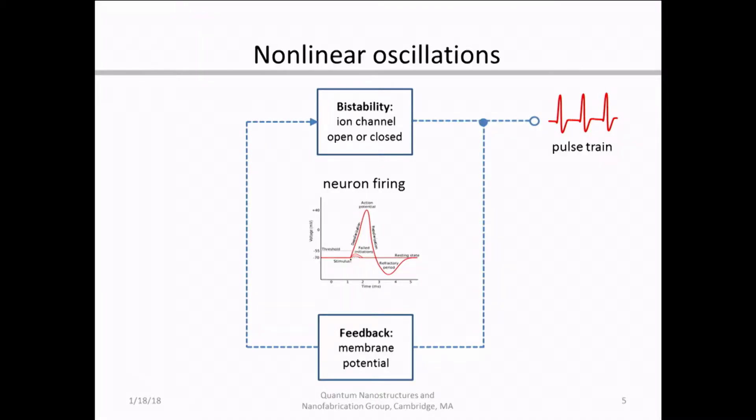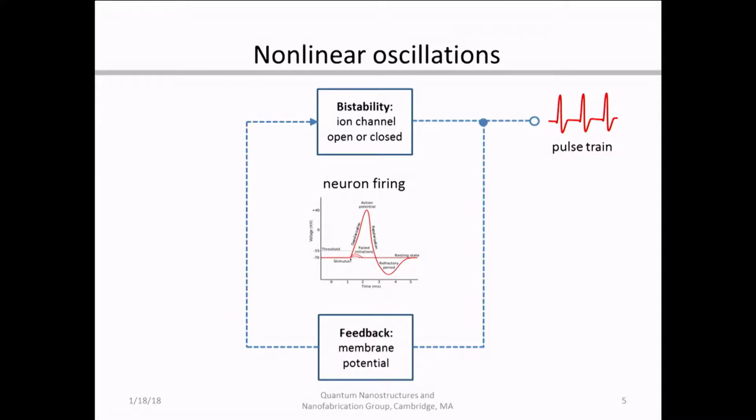You can really break down all of these behaviors into two very simple elements. The first is some type of bistability. In the example of neuron firing, that would be the state of the ion channel either being opened or closed. That bistability is fed through some type of feedback cycle — in the case of neuron firing, that would be the membrane potential. The combination of a bistability and a feedback cycle form an oscillation of that nonlinear behavior that looks like the pulse train shown here in red.